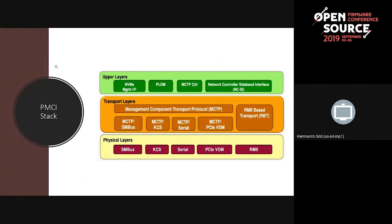This picture just groups different layers in the PMCI stack. At the very bottom is the physical layer, and currently all of the PMCI protocols are defined to function on these physical layers — SMBUS, KCS, PCI, vendor-defined messages, the serial interface, and RMII — but more can be added if there's a need. There are two transport protocols: MCTP with its bindings, and RBT which is RMII-based transport. At the upper layer are the data model protocols: PLDM, NVMe MI, NCSI, and an MCTP control specification.